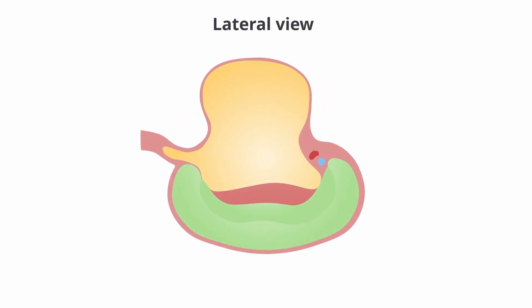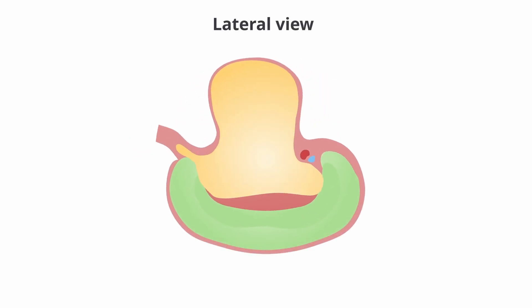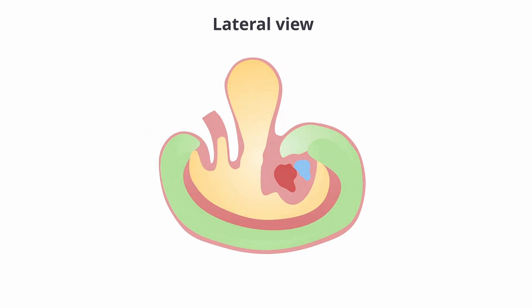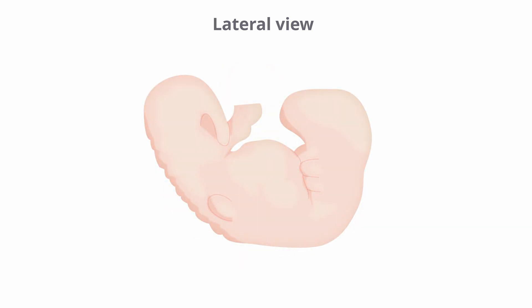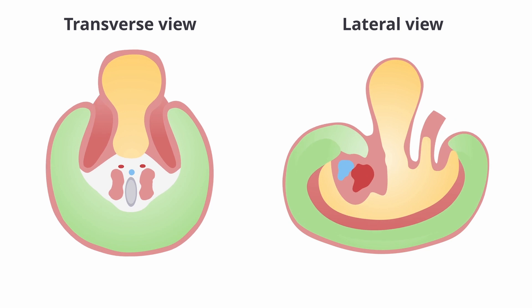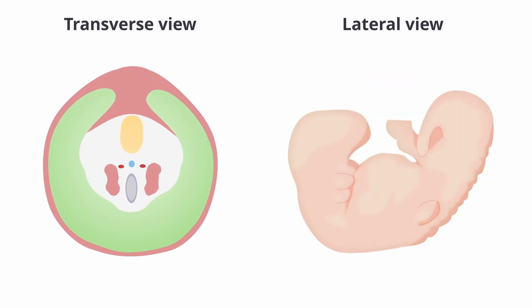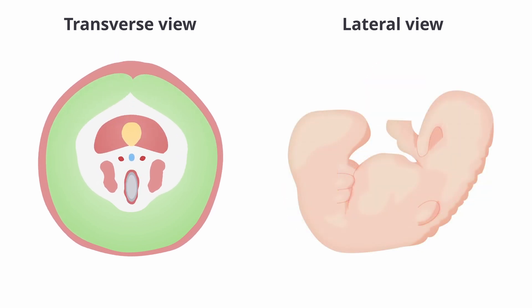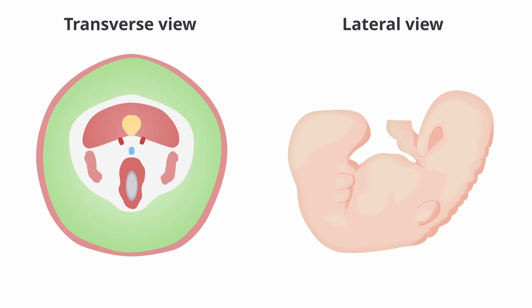Here we're seeing a lateral view from the side showing similar kinds of folding. It can be very complex, so we show transverse and lateral views side by side to see the various folds that occur. Looking at the transverse image, we'll see a defect that is our gastroschisis, and on the right you can also see where the bowel is herniating through the abdominal wall.